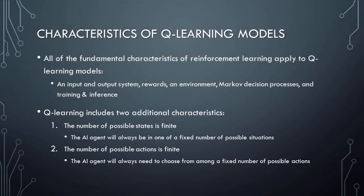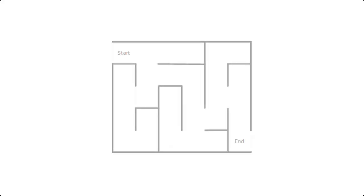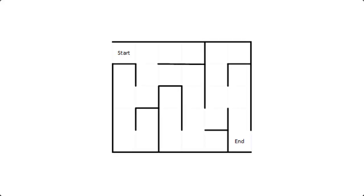With all of these characteristics in mind, let's take a look at a few classic Q-Learning problems, beginning with a maze. In a maze, we can think of each possible location as a state. The AI agent may find itself in any possible location, and hence may begin in any state. The goal is to reach the exit as quickly as possible. To do this, the AI must move in one of four directions — up, right, down, or left — and these four movements represent the possible actions that the AI agent can take.